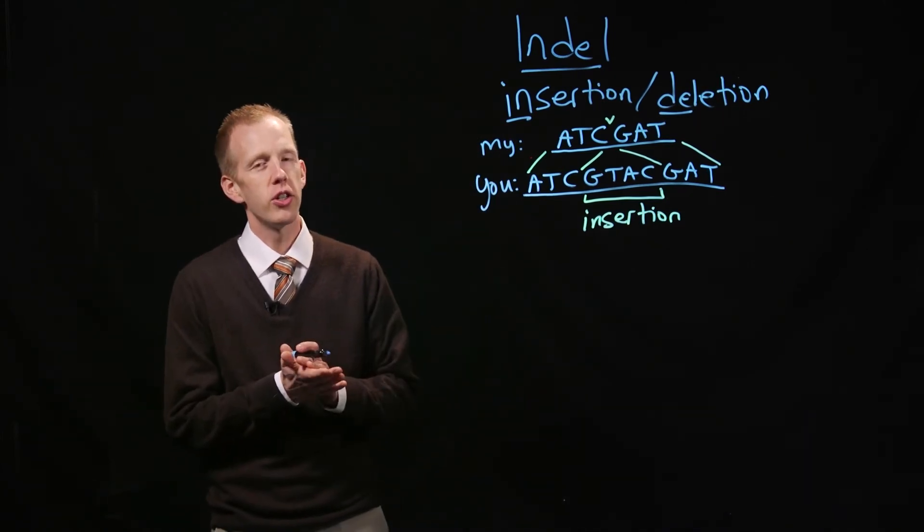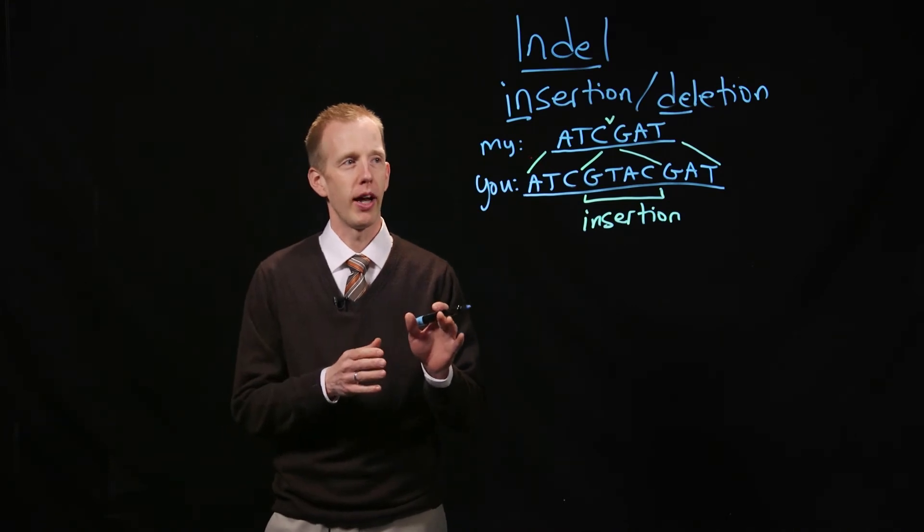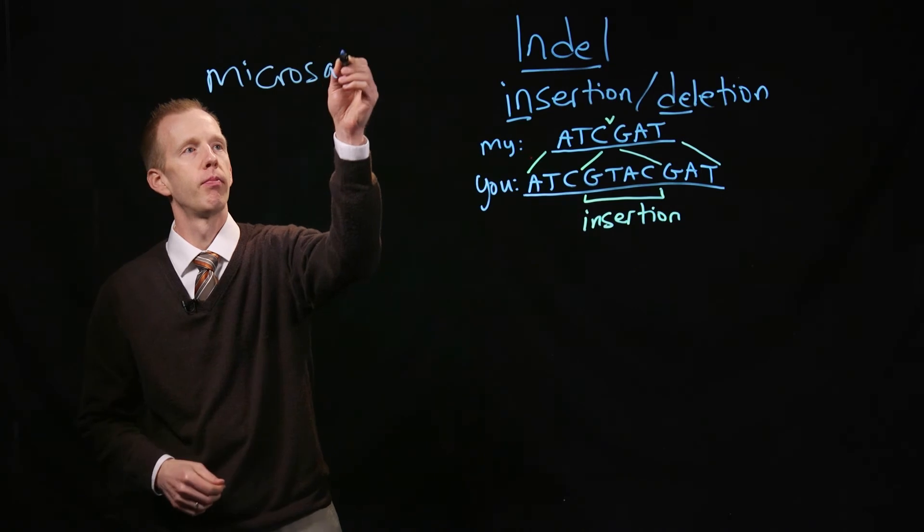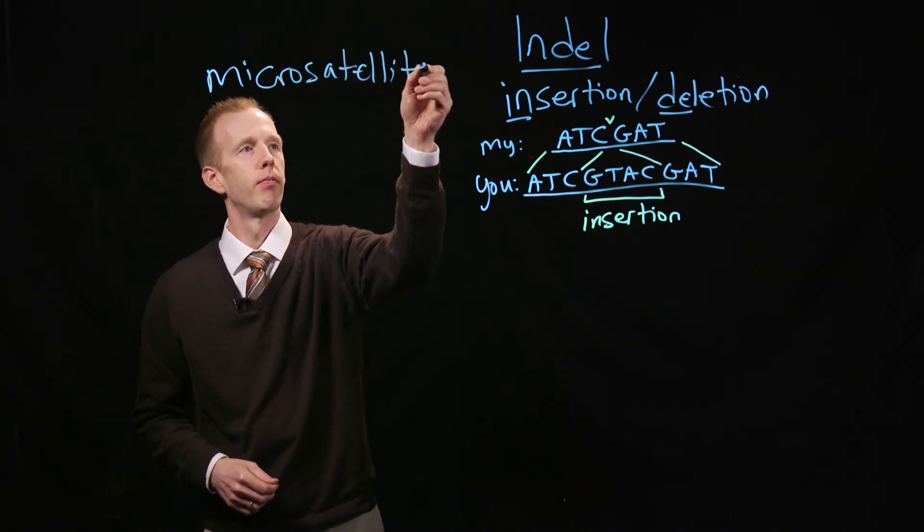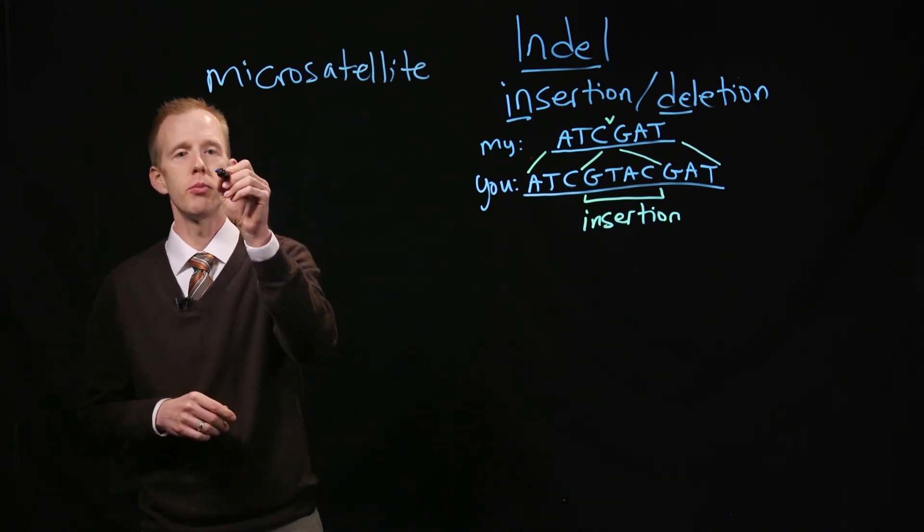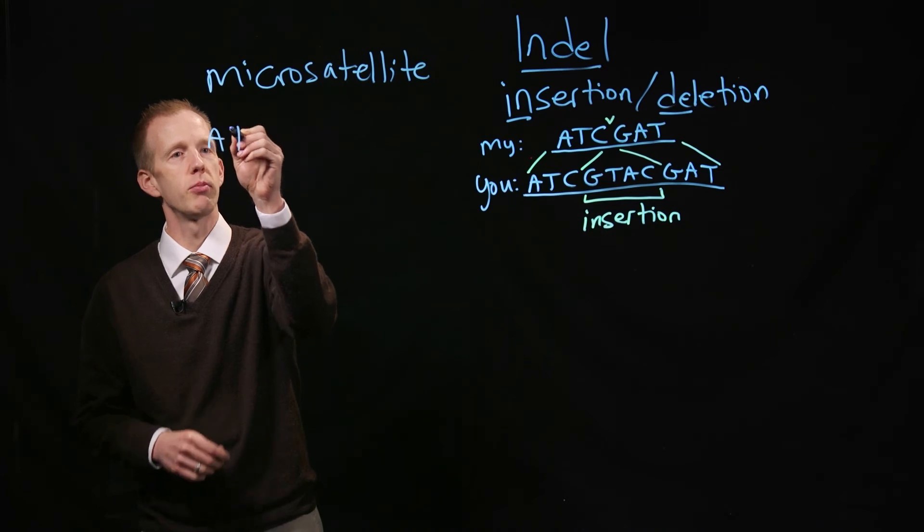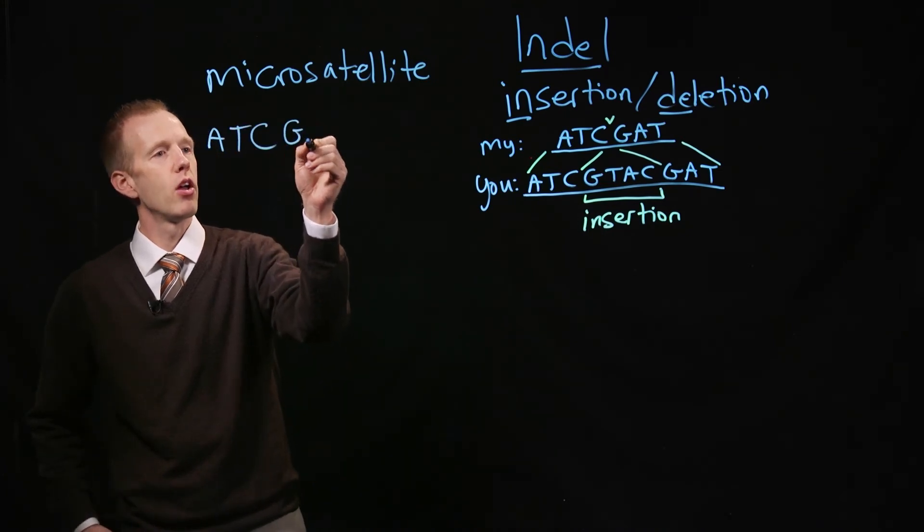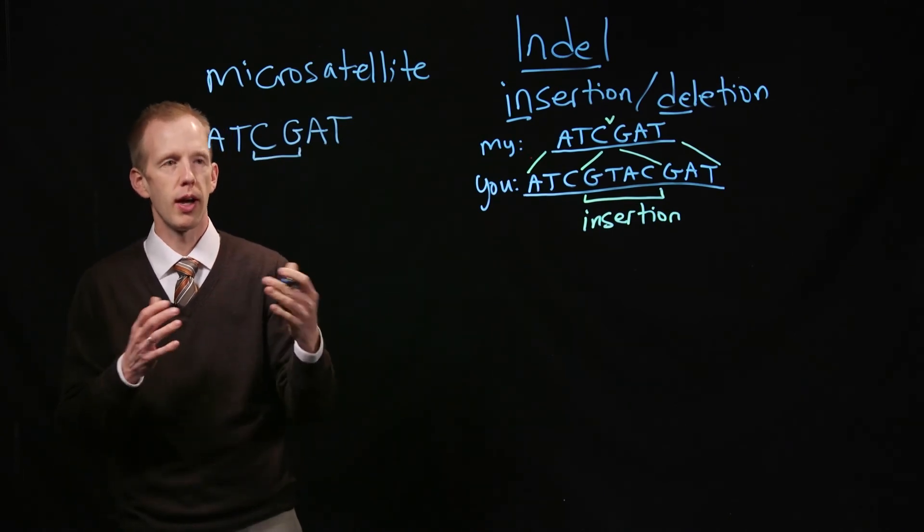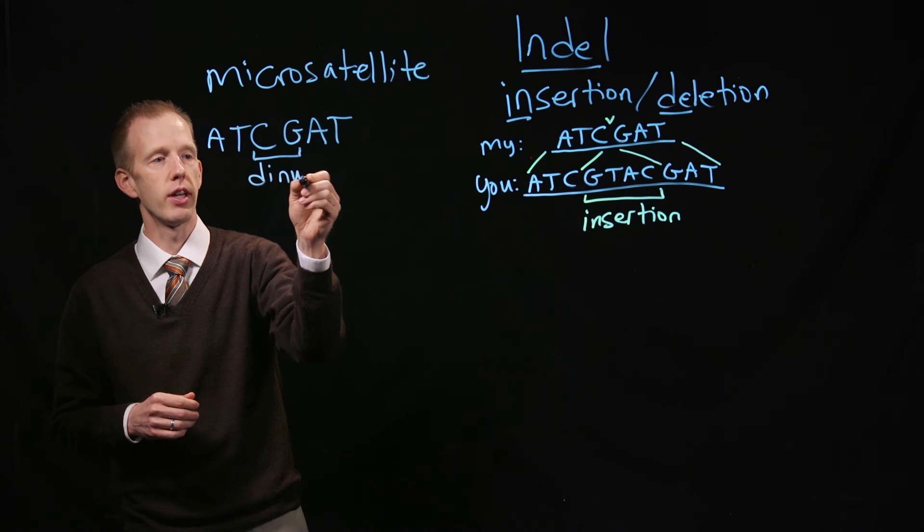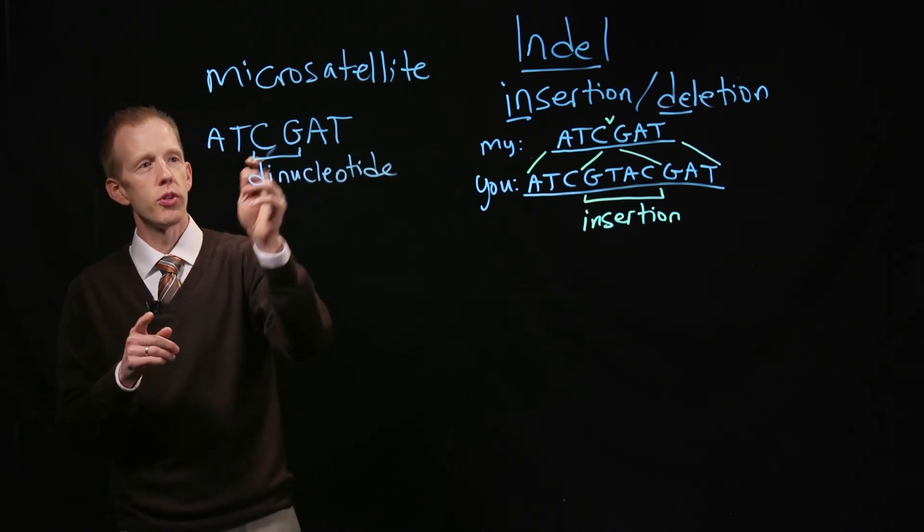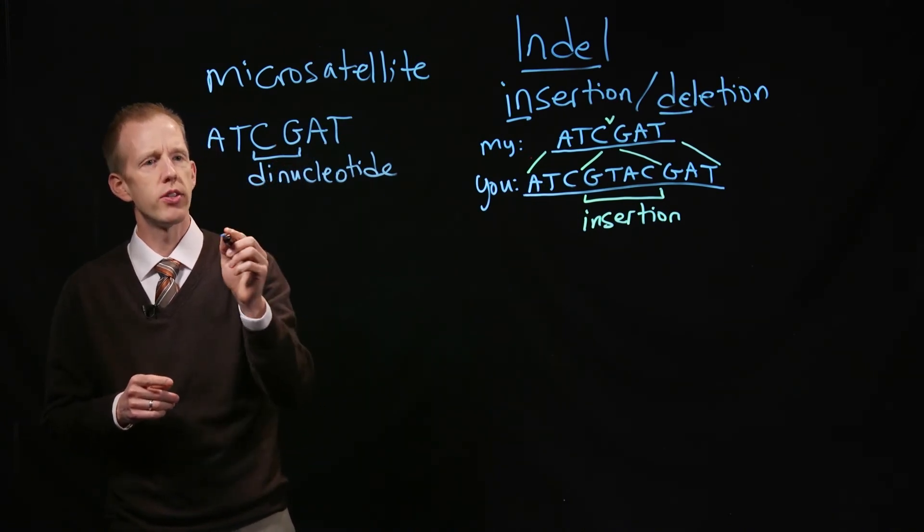There's one other type of insertion-deletion mutation that I really want to point out. There's a special category, and it's called a microsatellite. What this is, is a special type of insertion or deletion mutation, where in one copy of a chromosome, I'll use the same sequence again, there might be a pair of nucleotides, sometimes two, sometimes three. This would be a dinucleotide, two nucleotides. In some individuals, they might have one copy of that dinucleotide, just one CG.